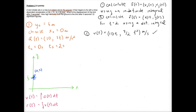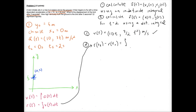Now we're going to do something very similar for our displacement vector, but in this case we are going to be using a definite integral because we want the displacement for two seconds. In terms of the steps it's going to be really similar — we'll do the x component first.